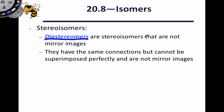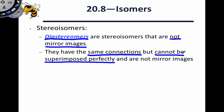Diastereomers are stereoisomers that are not mirror images. Two isomers that are mirror images of each other but are not the same have unique properties — they're called enantiomers, and we'll talk about those later. Diastereomers have the same connections and the same constitution, but cannot be superimposed perfectly, meaning they are non-identical. Crucially, diastereomers are not mirror images of each other. If two structures are mirror images but are non-identical, they are enantiomers.